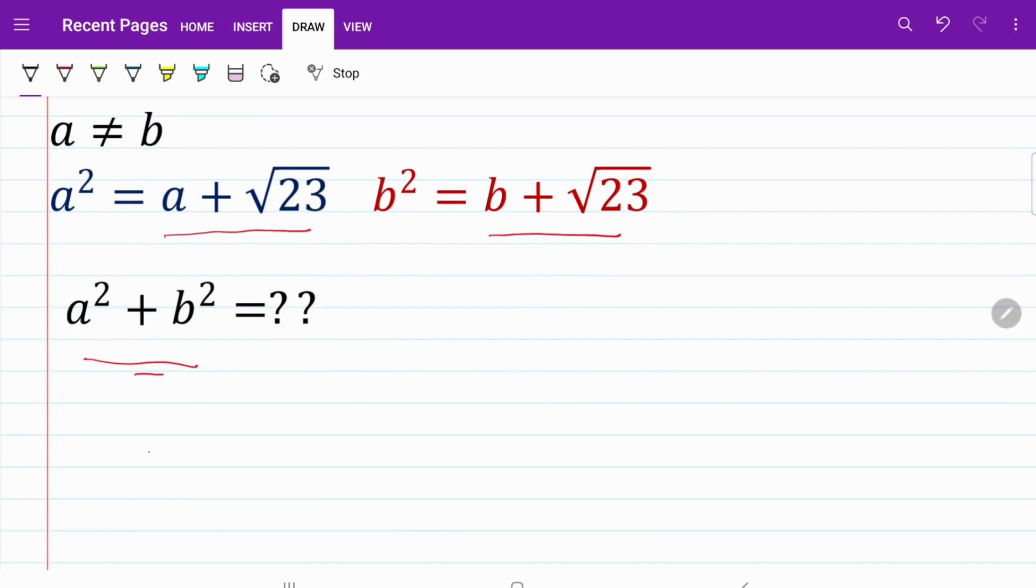I have a² + b² = a + √23 + b + √23. It's very straightforward.